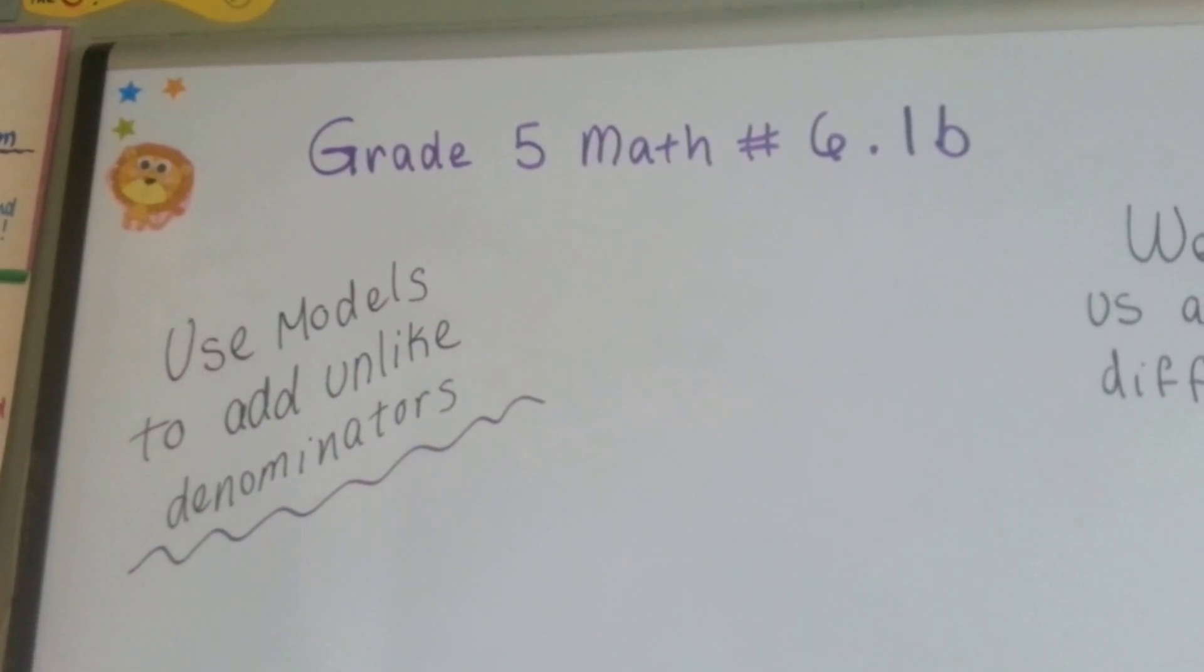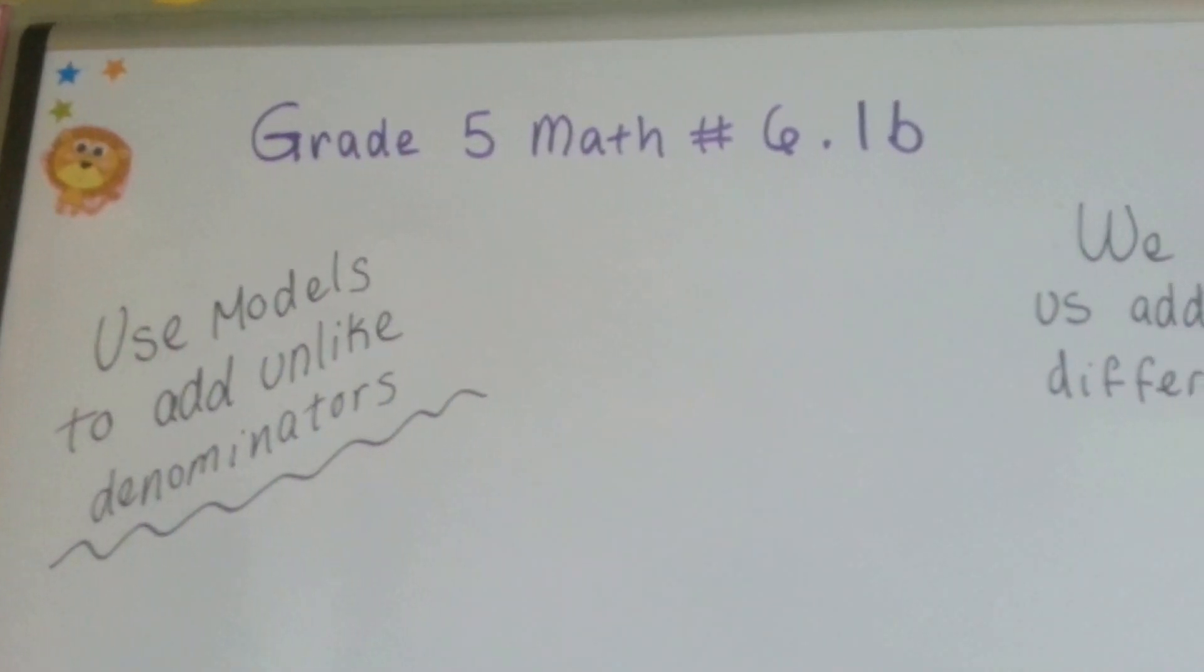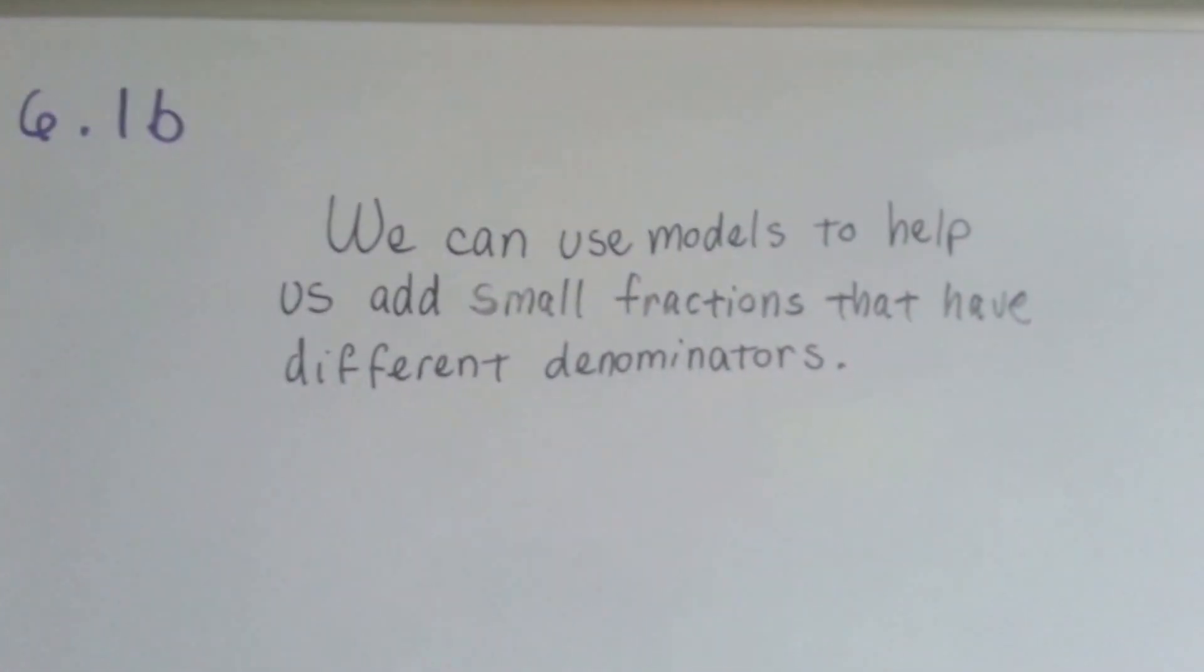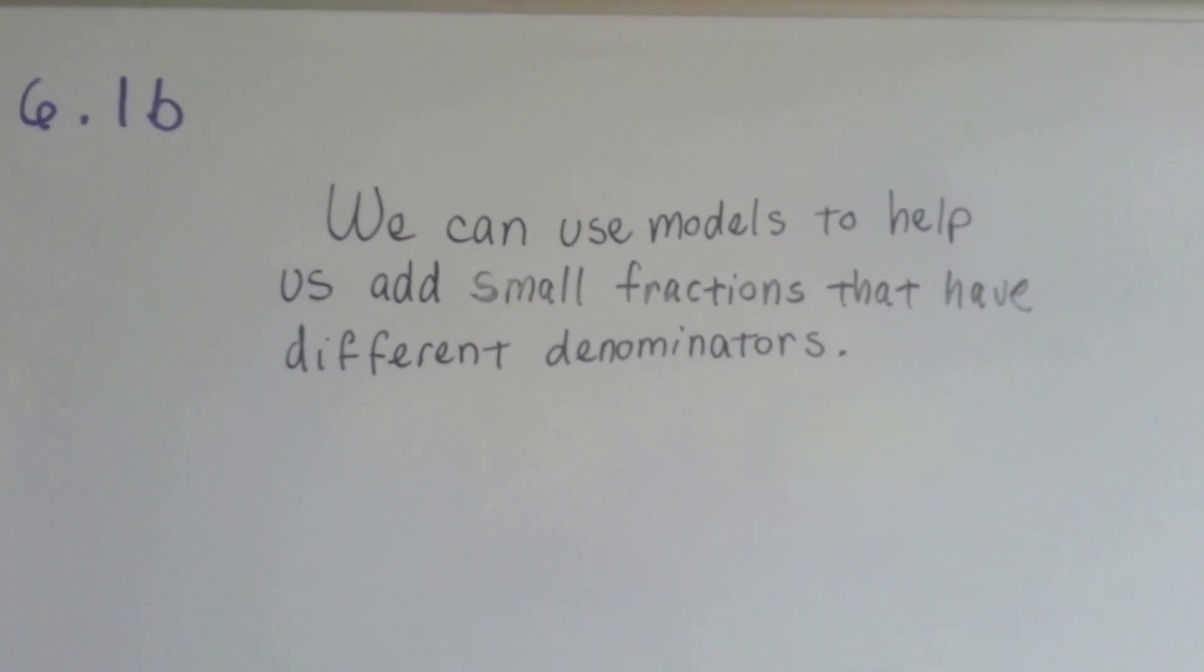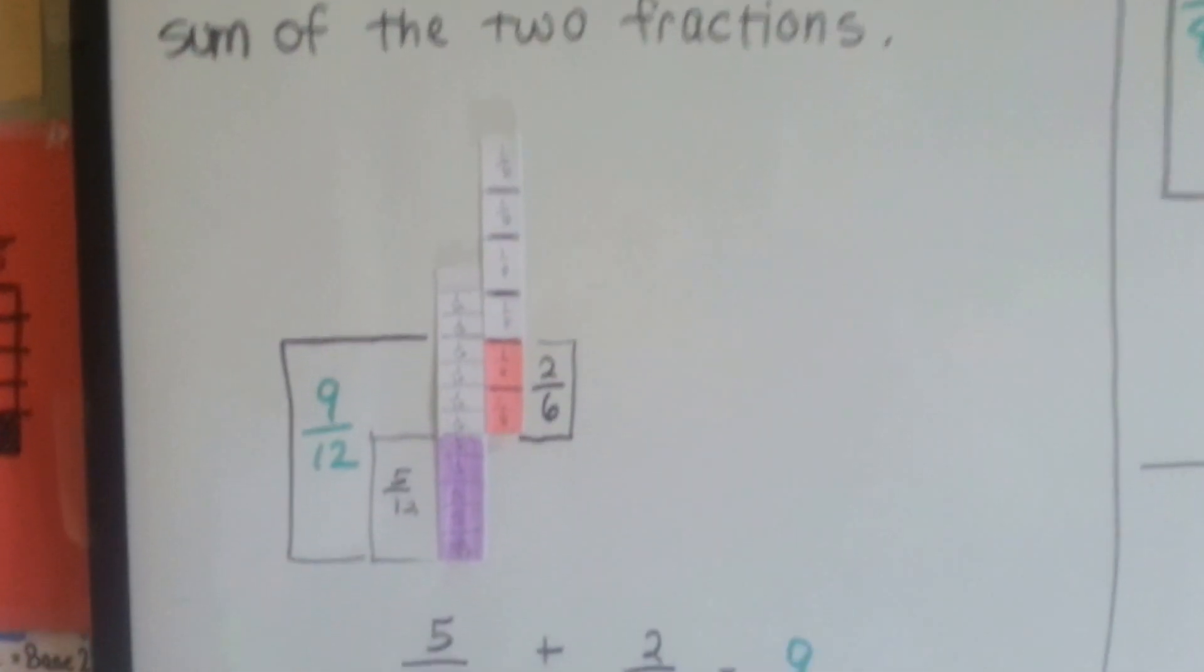Grade 5 math, number 6-1-B. Use models to add unlike denominators. We can use models to help us add small fractions that have different denominators. The models can show us the sum of the two fractions.